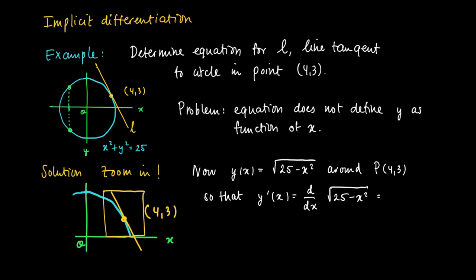So y prime equals the derivative of the square root of 25 minus x squared. You may deduce that this is minus 2x, which is the derivative of 25 minus x squared, divided by 2 times the square root of 25 minus x squared.